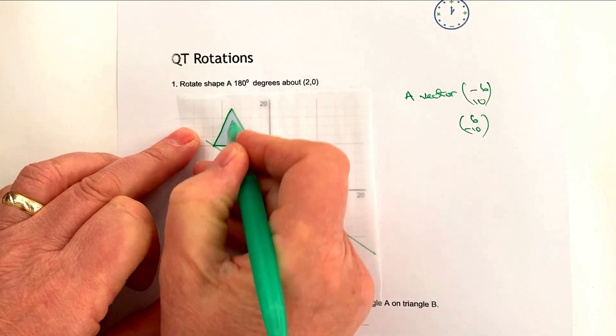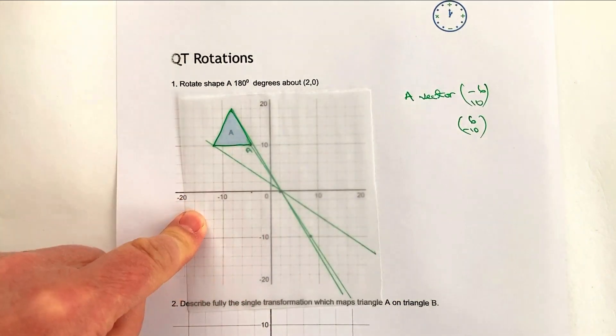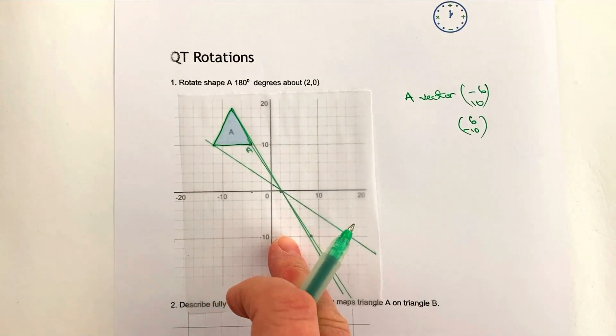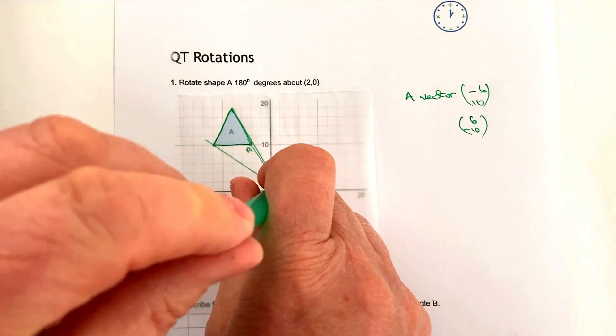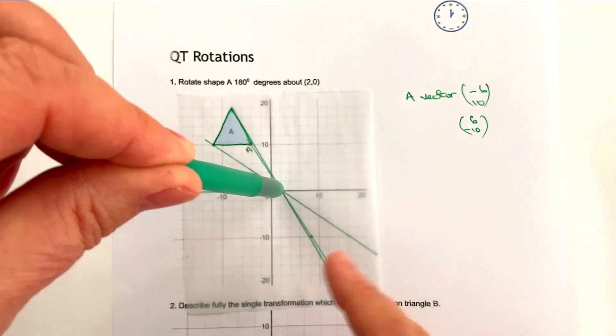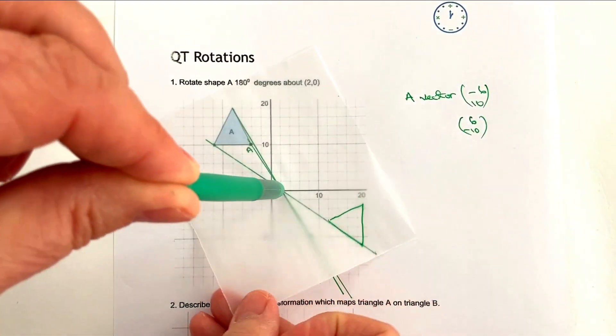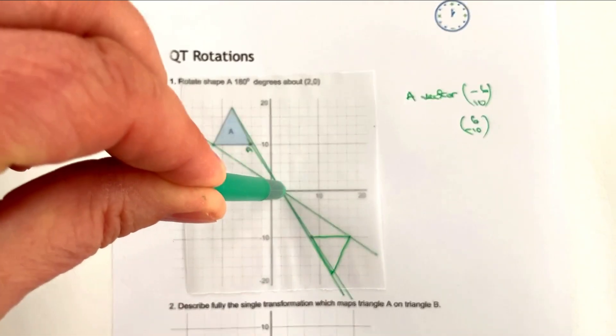What we do is we use a bit of tracing paper. If you're in an exam and you don't have any tracing paper, please do ask the invigilator. You'll be able to get a piece of tracing paper. Put a pen or some other sort of object over the top of the mark here, and then just basically rotate it around.